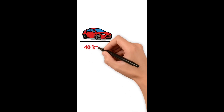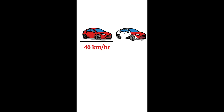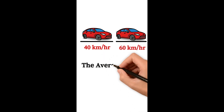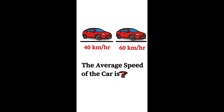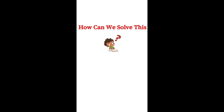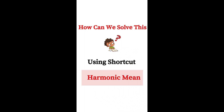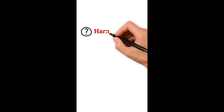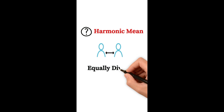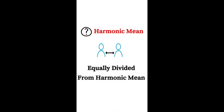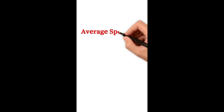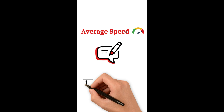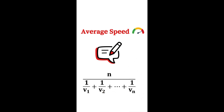A car covers the first half of the distance between two places at 40 km/h and the other half at 60 km/h. What is the average speed? We use the harmonic mean shortcut because distance is equally divided. The formula is: v_average = n divided by (1/v1 + 1/v2 + ... + 1/vn).